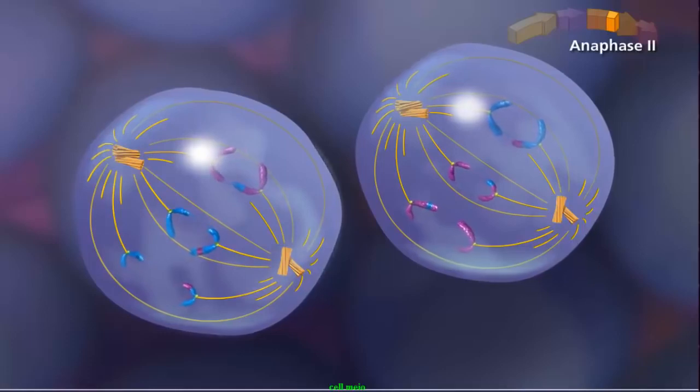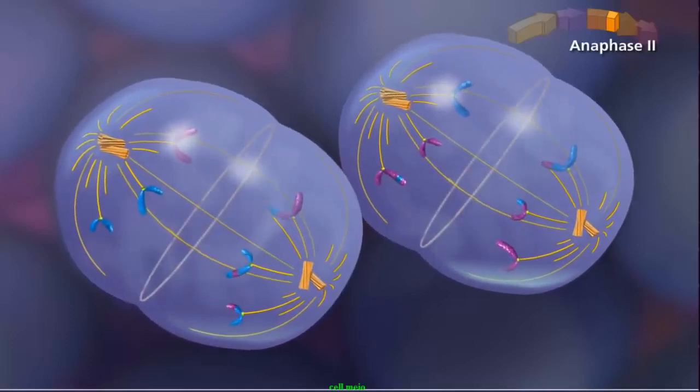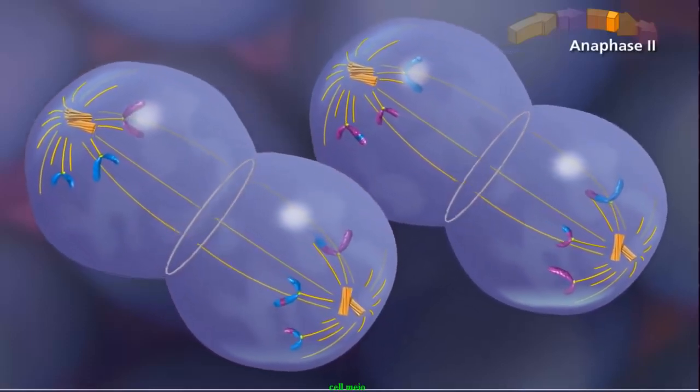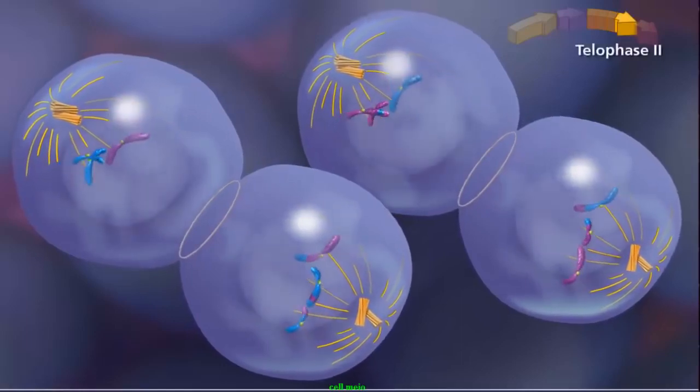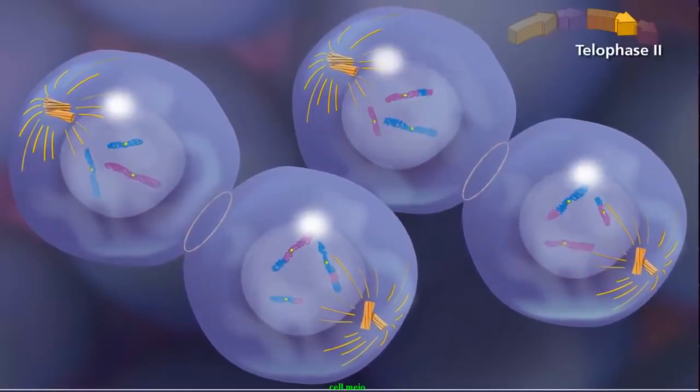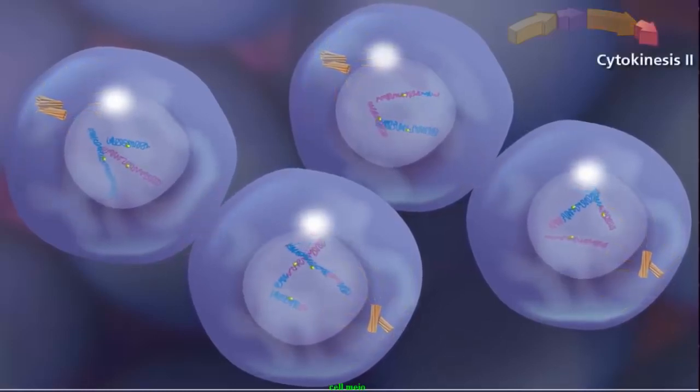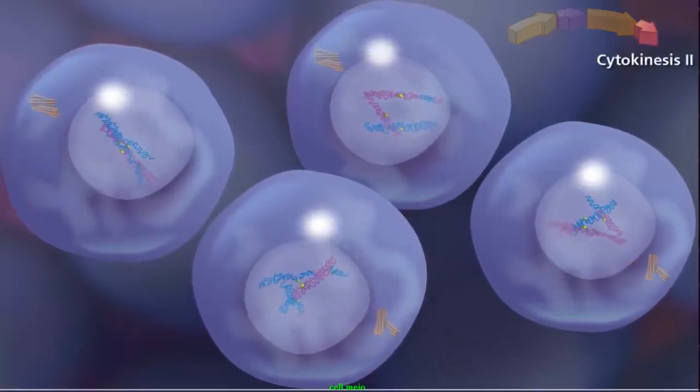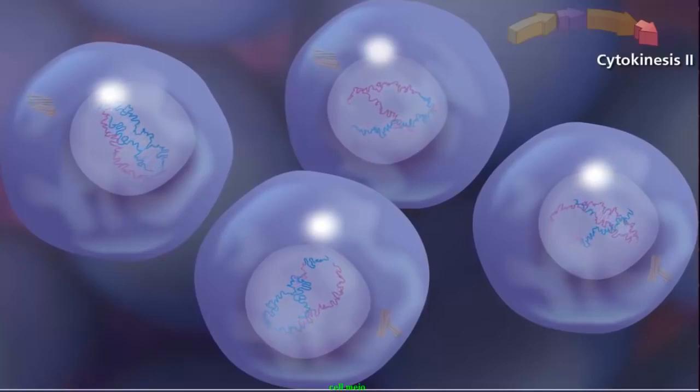During anaphase II, sister chromatids separate and individual chromosomes move toward the poles. The entire process ends with telophase II, as the chromosomes decondense and the nuclear envelope reforms. Cytokinesis occurs, and cleavage furrows separate the two daughter cells into four haploid daughter cells.